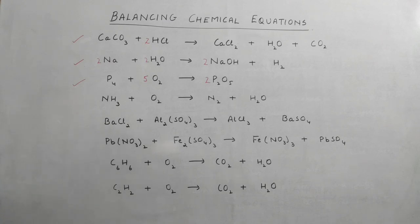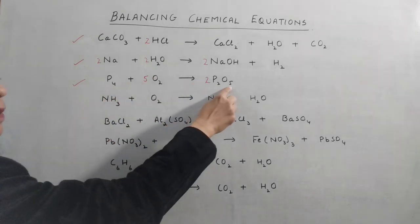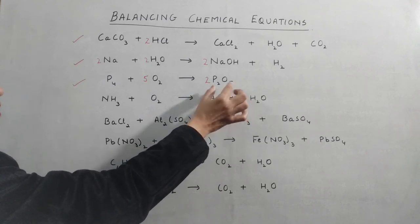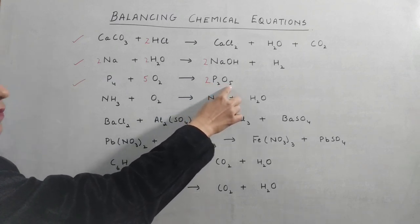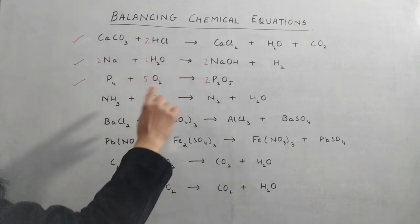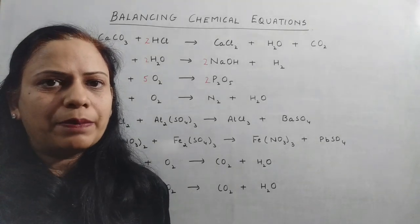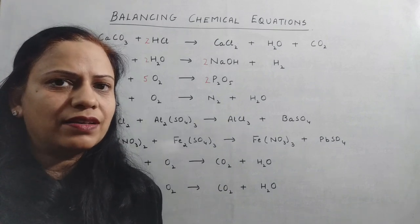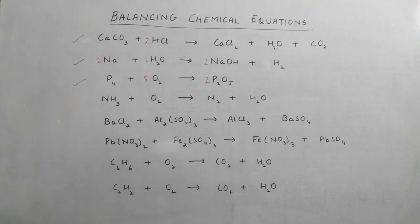While balancing, you must be careful not to change the subscript numbers in the formula. For example, in P₂O₅ — phosphorus pentoxide — you cannot change the 2 to 4 or the 5 to 10. You can only add a coefficient before the main formula. That is why I use a different color pen so you can easily identify where we place the coefficients, and we must not change the original subscript numbers in the equation.